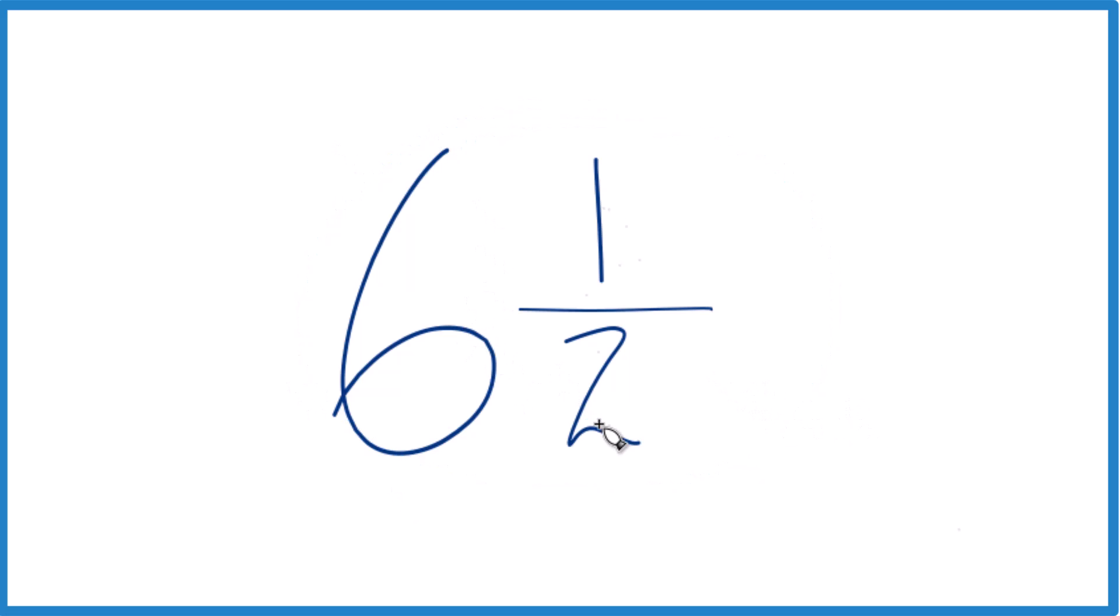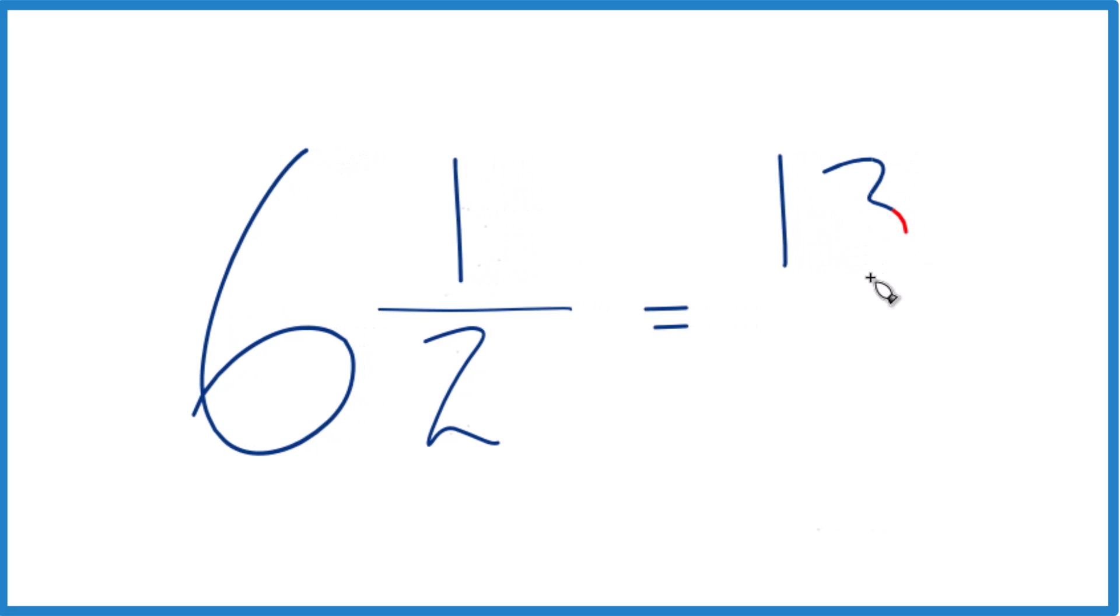6, that's the whole number, times 2, that's 12. 6 times 2 is 12, plus 1. That gives us the numerator. Bring the 2 across, and that's the improper fraction for the mixed number 6 and 1 half. We get 13 halves.